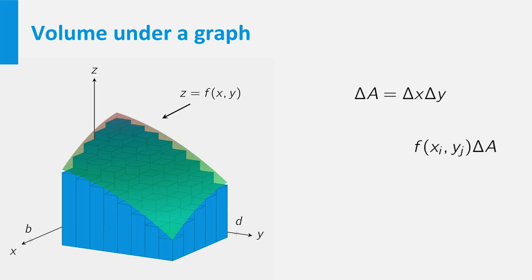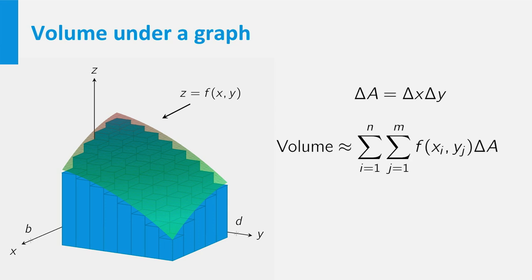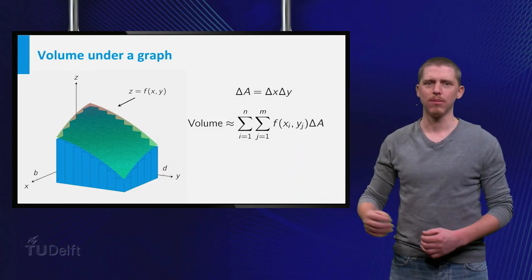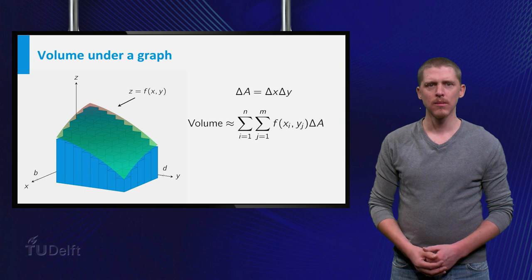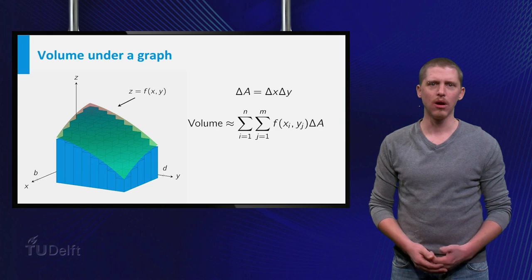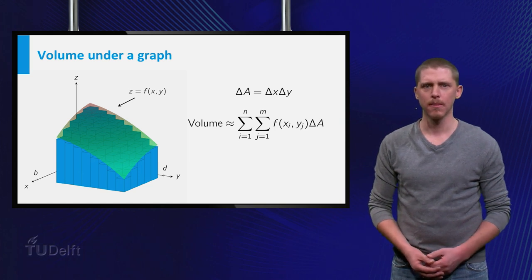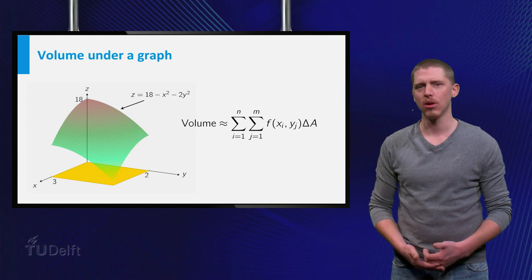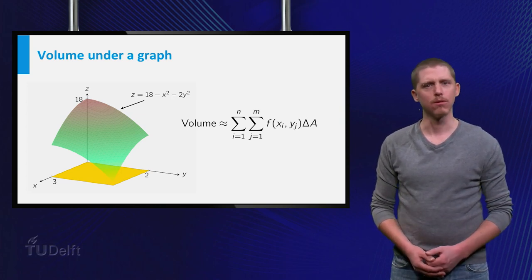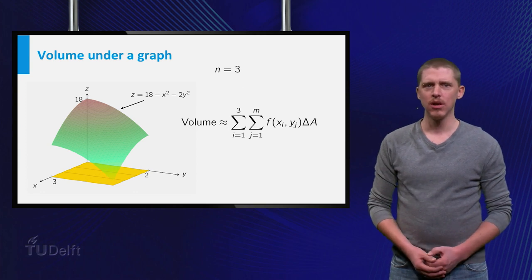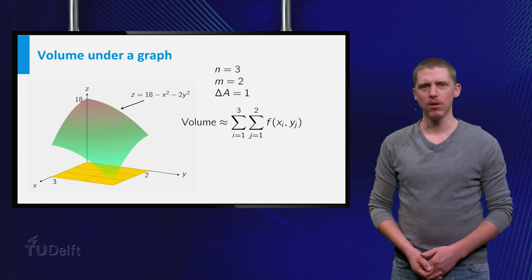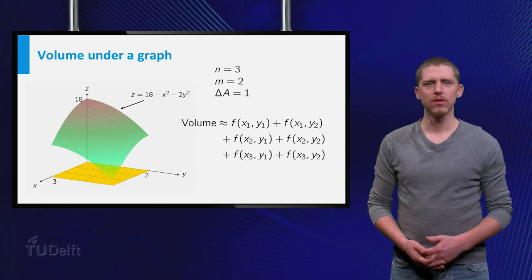The volume of this small box is given by f at (xi, yj) times delta A. If we add the volumes of all these boxes, we obtain an approximation of the volume of the given solid. This expression is called a Riemann sum. Let us go back to the initial function and try to approximate the volume below its graph using a Riemann sum. We first need to decide how many smaller rectangles we are going to use. Let us choose n equal to 3 and m equal to 2, so in total we have 6 smaller rectangles, delta A equals 1, and we can write out the Riemann sum.